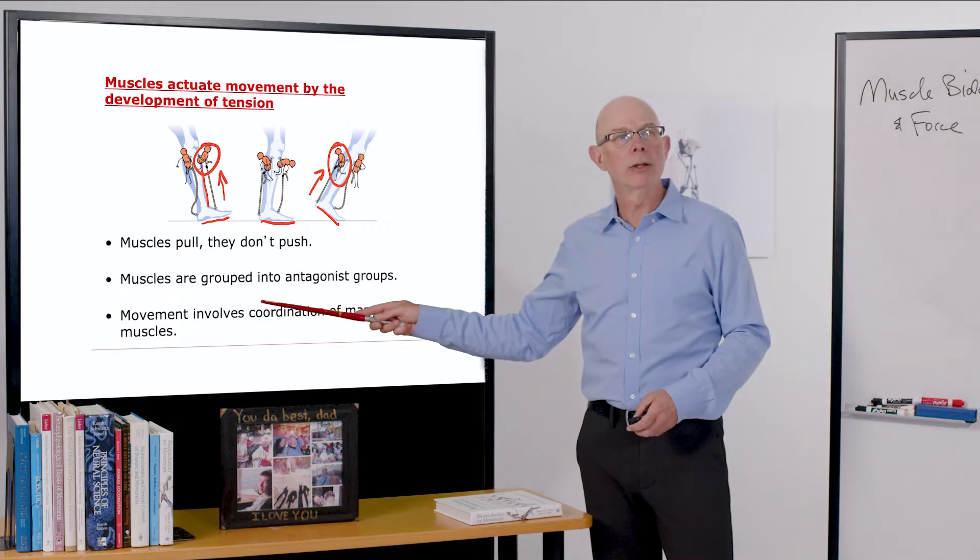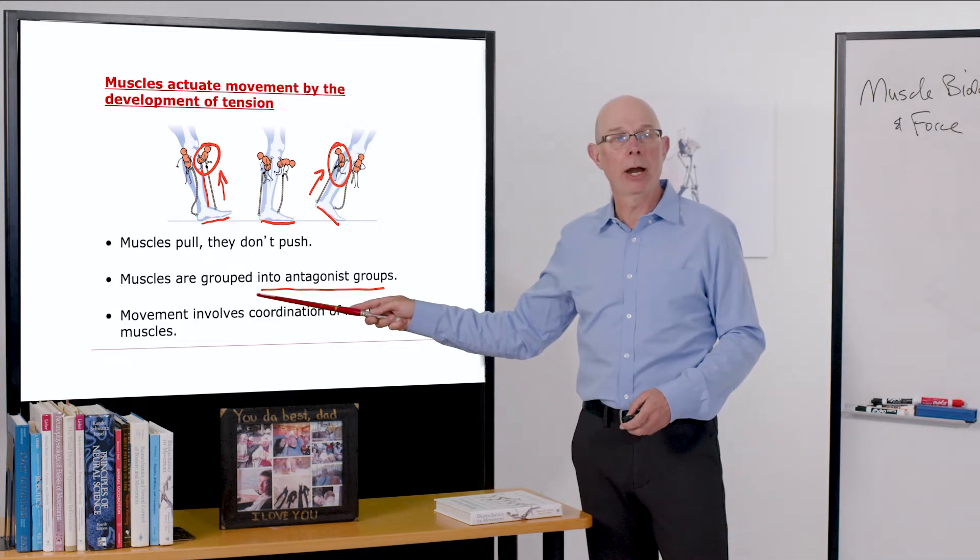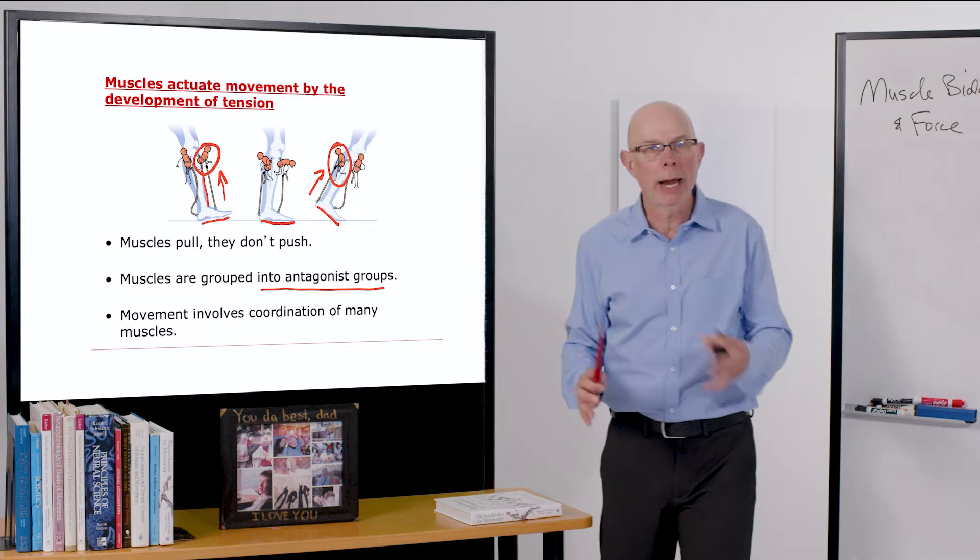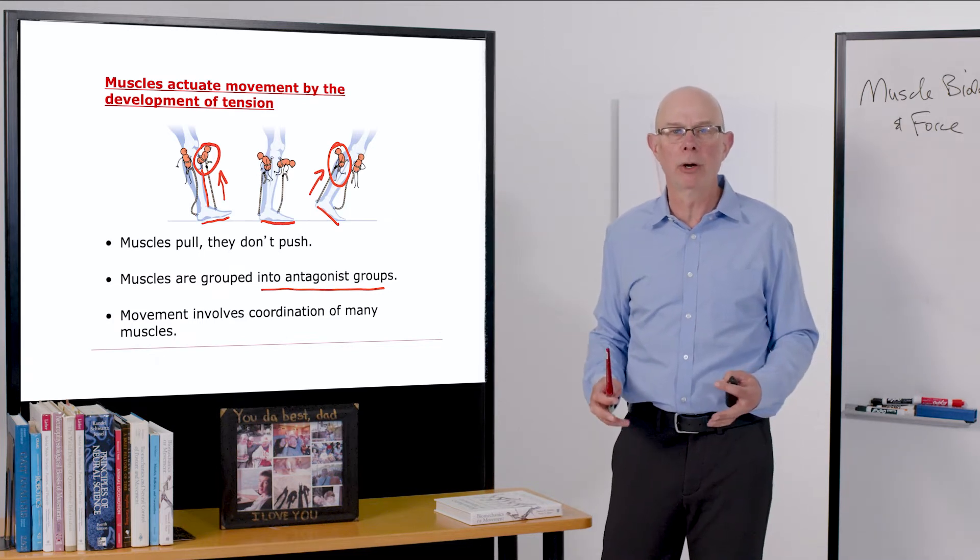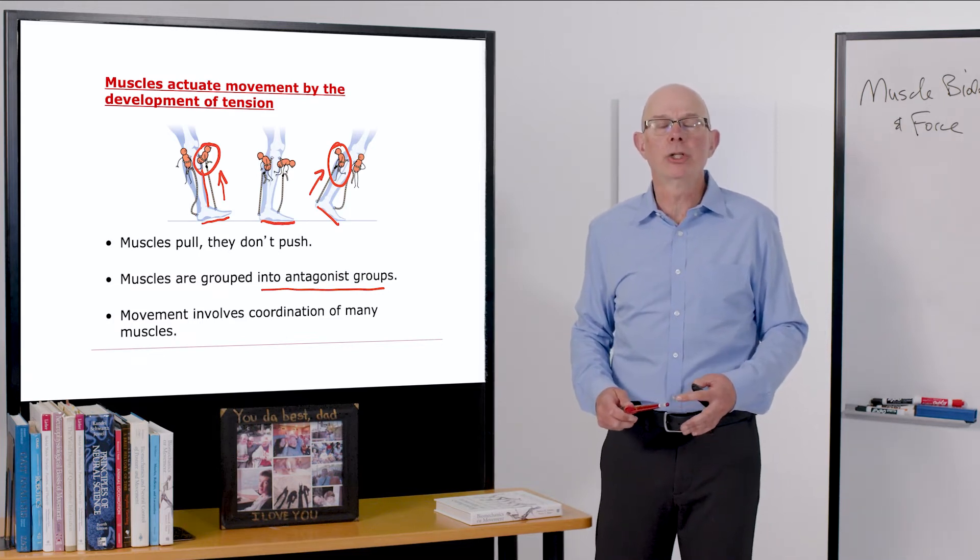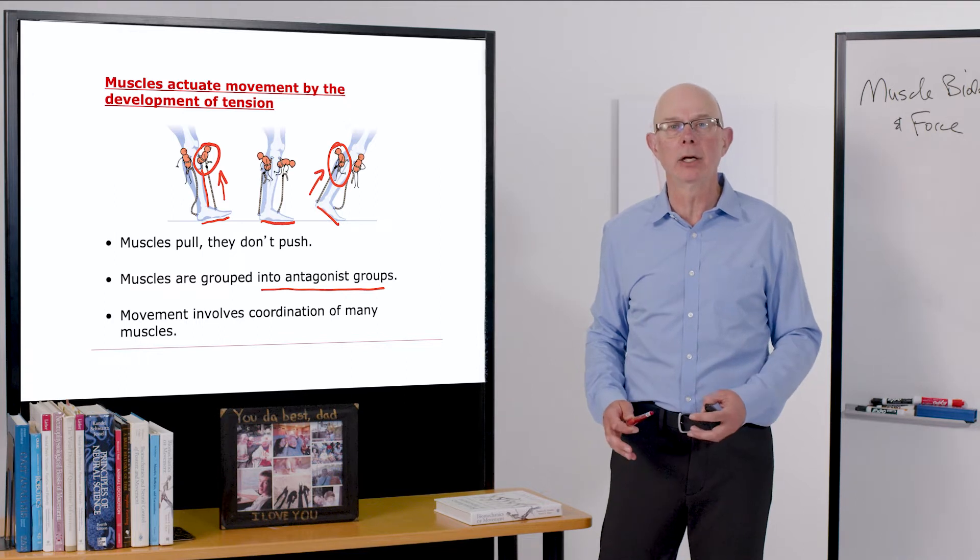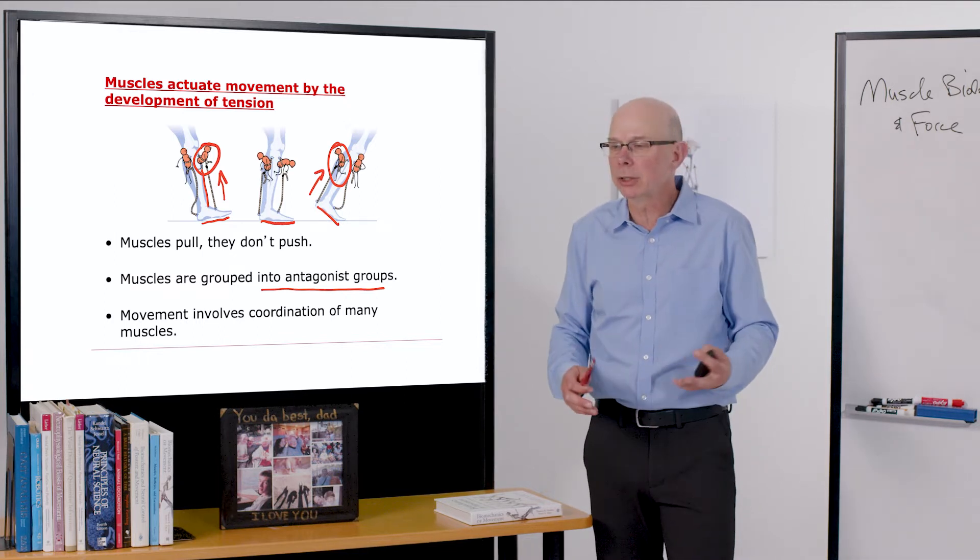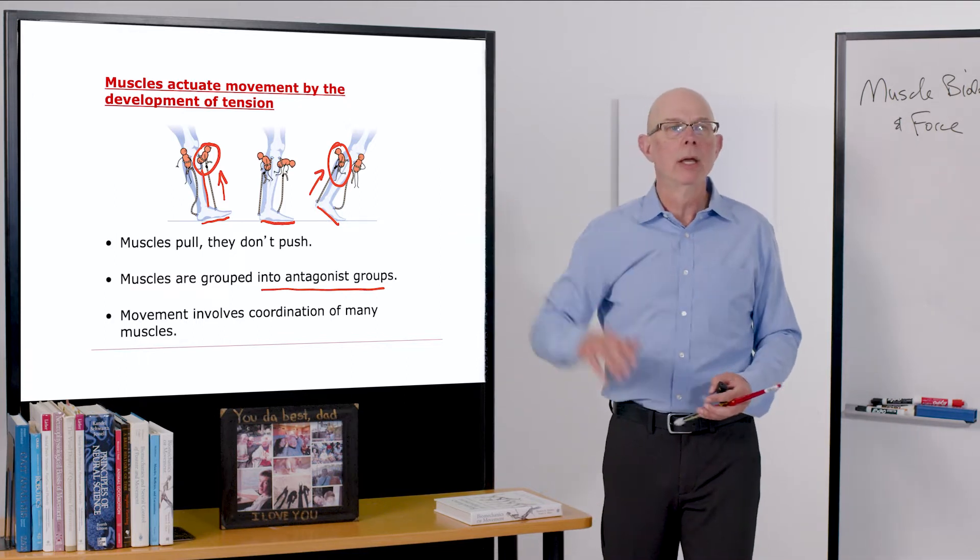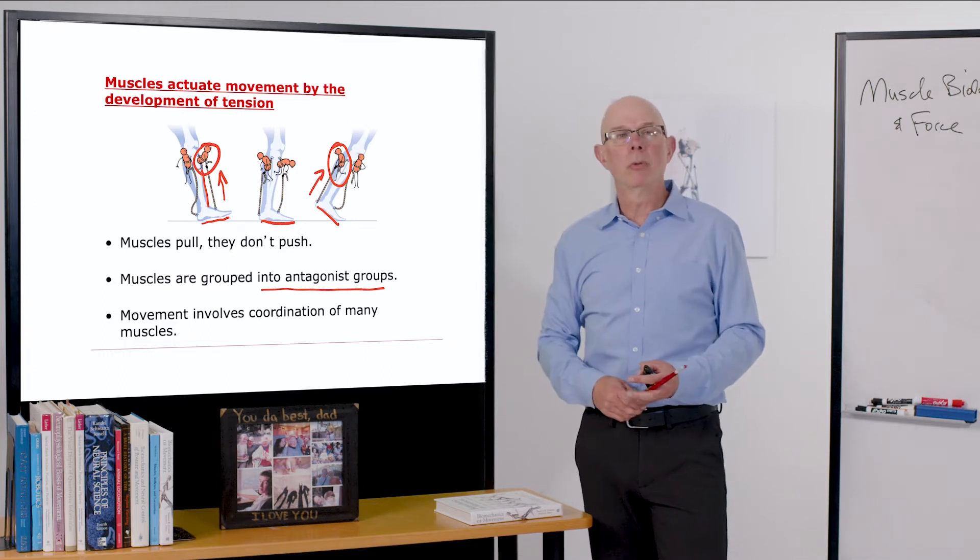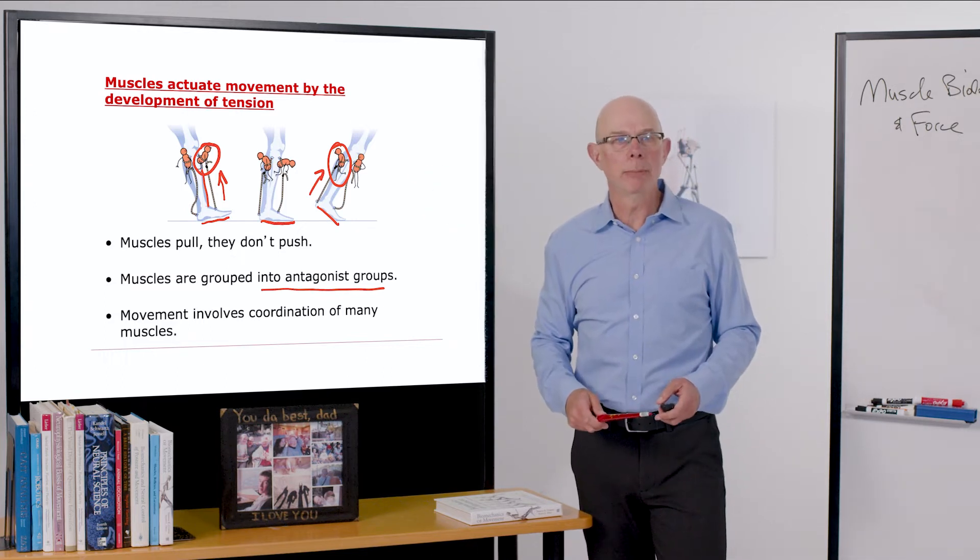Muscles are grouped into these antagonist pairs. And in fact, it's not just pairs of muscles like I'm showing here. It's really coordination of many muscles that are needed to coordinate movement. Even the simplest movements like a pointing is the result of coordination of many muscles.